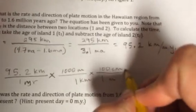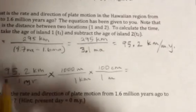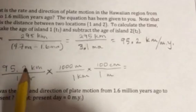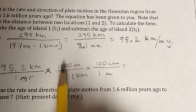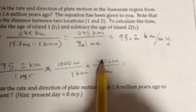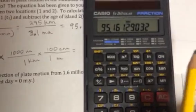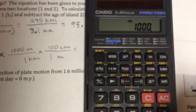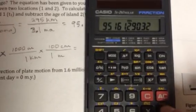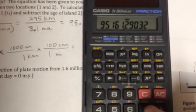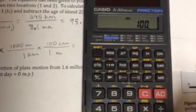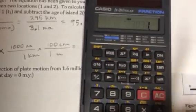So we're just going to take 95.2, and we're going to go times 1,000 divided by 1, times 100 divided by 1. So over here, we can just do times 1,000, divided by 1, times 100, divided by 1, which is the same thing.